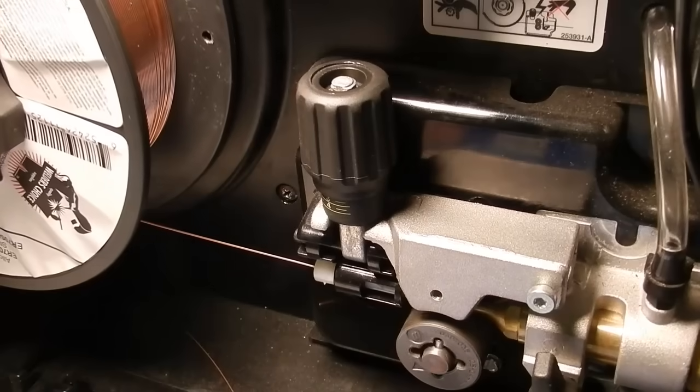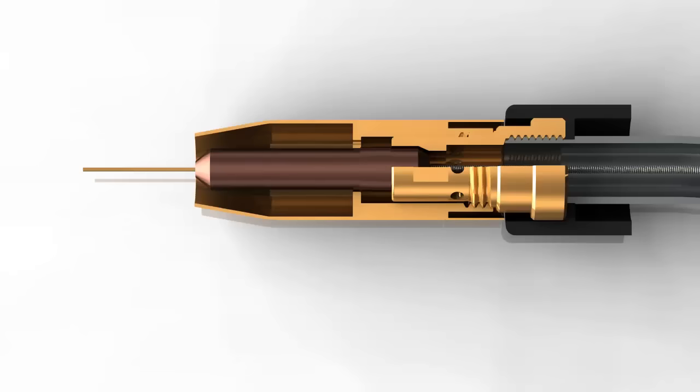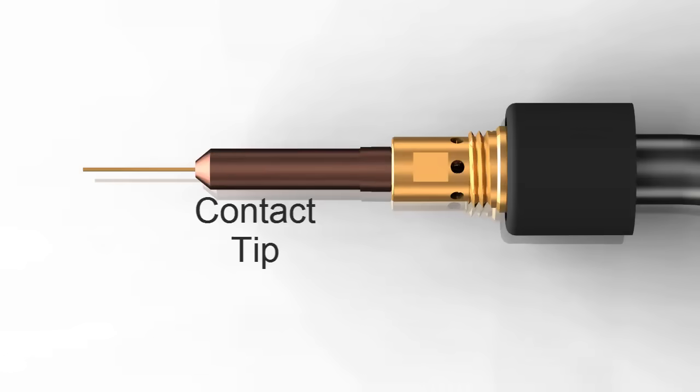Here's the MIG wire going through the wire feeder into a flexible tube or conduit liner. The liner goes through the hose or welding lead all the way to the torch nozzle. At the nozzle, the wire is fed through a contact tip and comes out at the point of the weld.